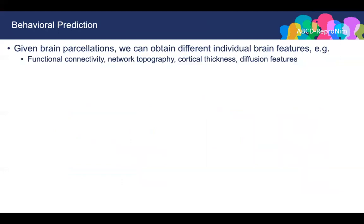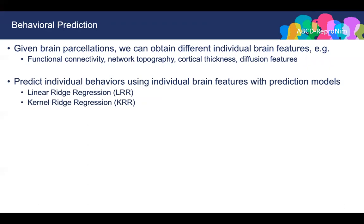In the next part of today's lecture, I will talk about supervised models for behavior prediction. So far, we have discussed several methods for estimating individual-specific parcellations. After we estimate the parcellation, we can obtain different individual brain features such as functional connectivity, network topography, cortical thickness, and diffusion features. These brain features can be used to predict individual behaviors. I will explain two supervised prediction models: the linear ridge regression and the kernel ridge regression.